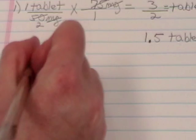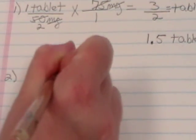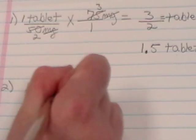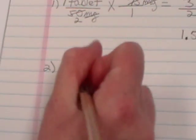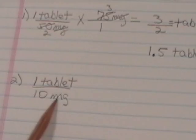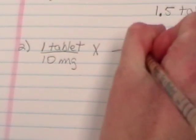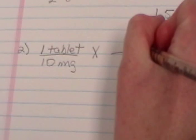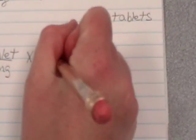So our first fraction will be 1 tablet over 10 milligrams. And we have milligrams in the denominator of our beginning fraction. So we will have milligrams in the numerator of our second fraction. And the number that we will be working with there is 5 milligrams, which is what our physician has ordered. And that will just be over 1.